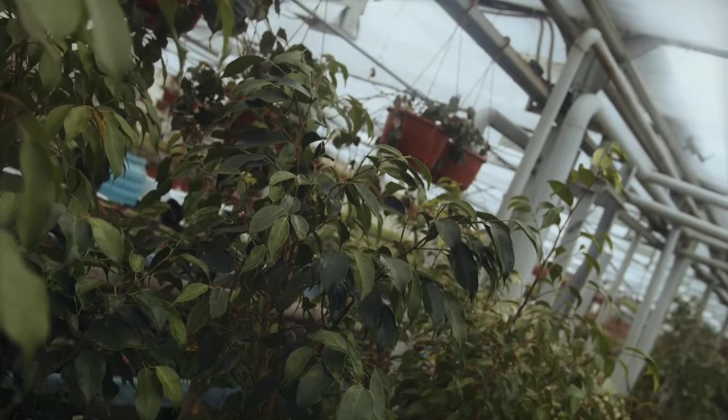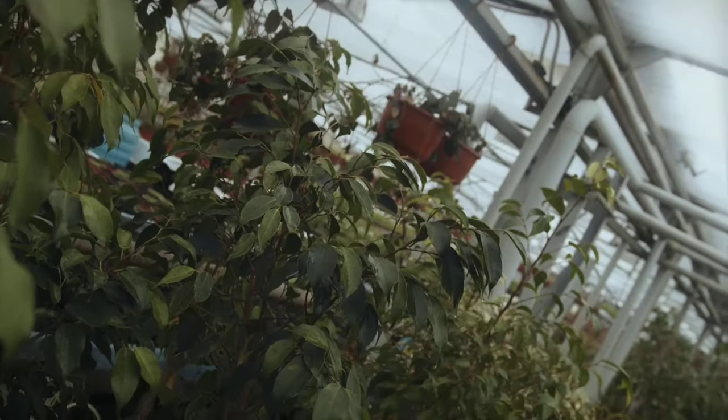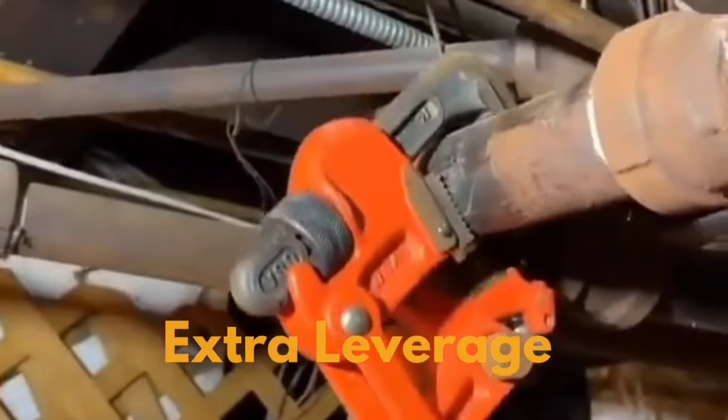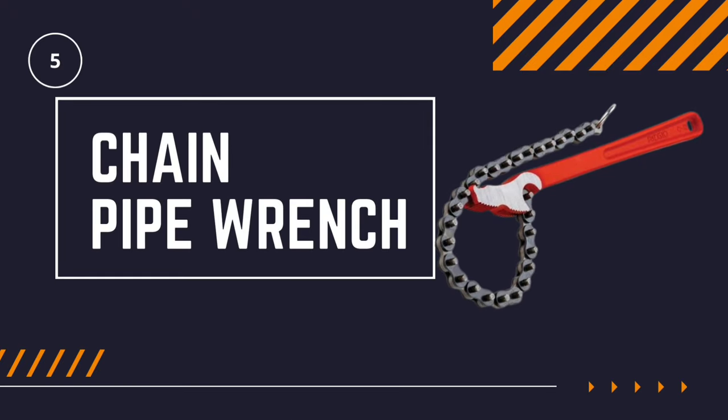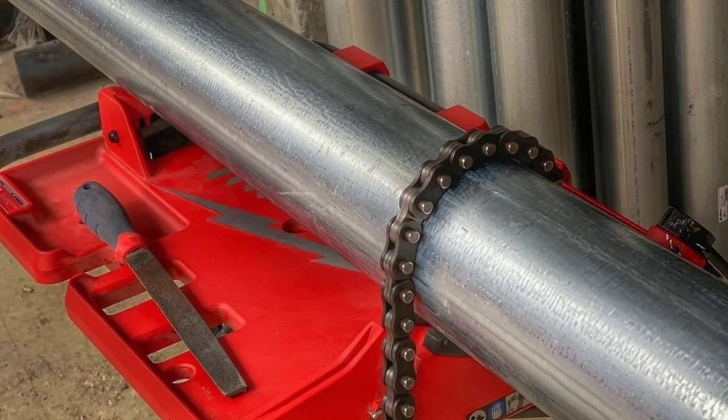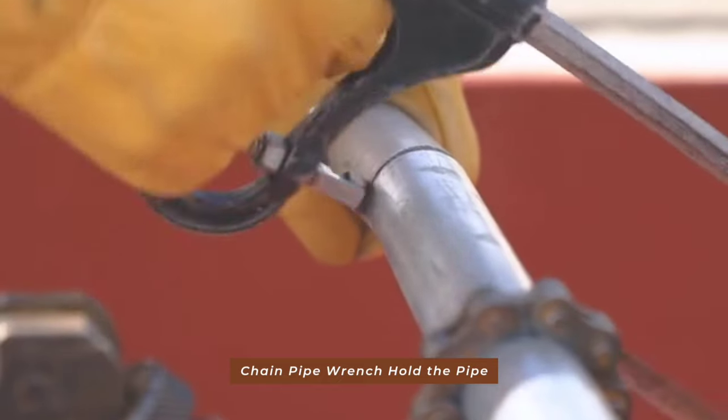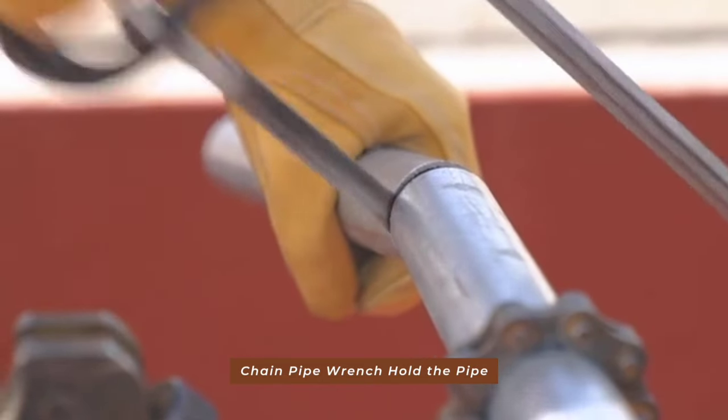If you are dealing with extremely tight connections or older, corroded pipes, you might want to use a compound leverage pipe wrench. The extra leverage allows you to apply more torque without putting in too much effort. And finally, we have chain pipe wrench which is different from the others in that it uses a chain to grip the pipes instead of jaws. This is great for larger pipes or irregularly shaped objects where a regular pipe wrench would not work as well.